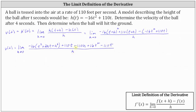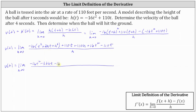Next, we clear this last set of parentheses and then combine like terms in the numerator. Distributing negative 16, we have negative 16t squared minus 32ht minus 16h squared. Everything else remains the same for now.